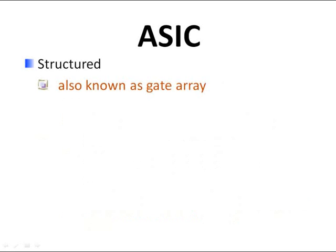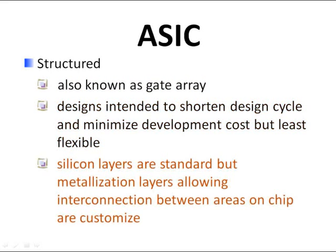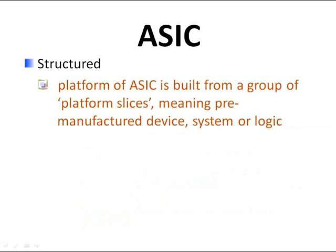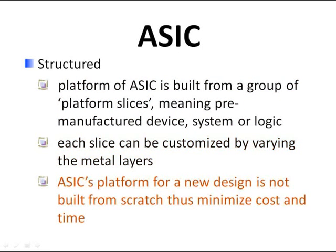Lastly, the structured or gate array ASIC is designed to shorten design cycle and minimize cost, but it is the least flexible. The silicon layers are standard, but metalization layers allowing interconnection between areas on chip are customized. The platform is built from a group of platform sizes, meaning pre-manufactured devices, systems, or logic. Each slice can be customized by varying the metal layers, meaning the platform for a new design is not built from scratch.